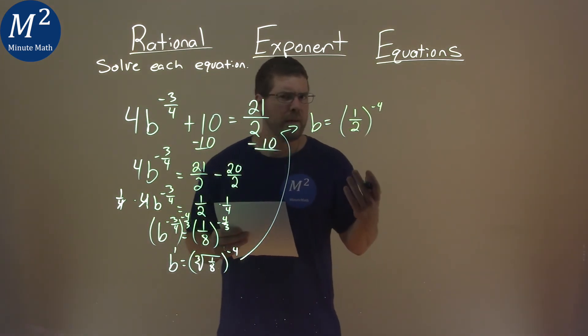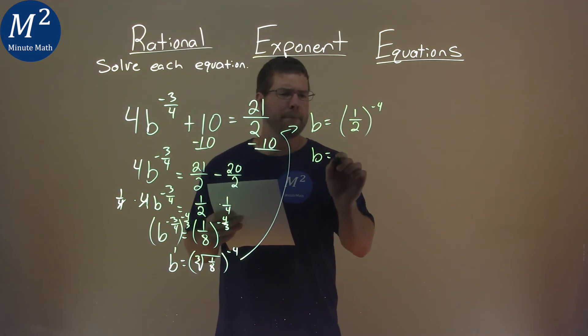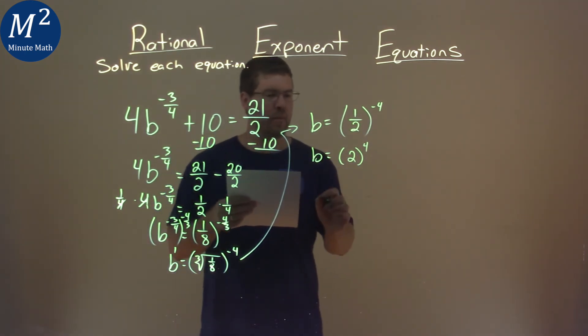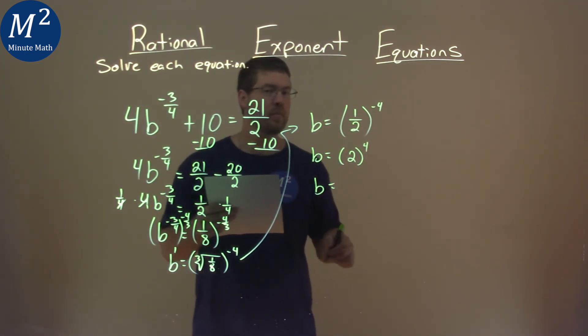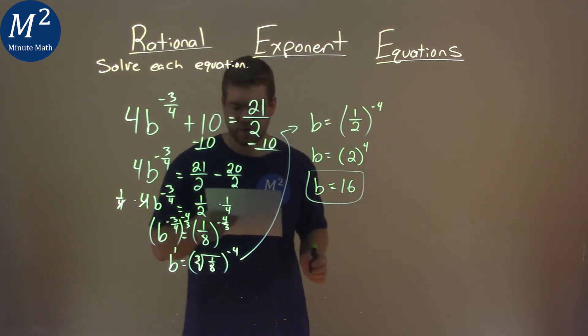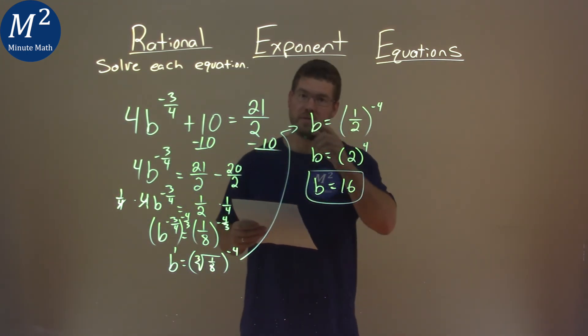So where do we go with that? Well, 1 half raised to the negative 4th power is the same thing as 2 raised to a positive 4th power. And what's 2 to the 4th power? 2 to the 4th power is 16. And so my final answer here is b equals 16.